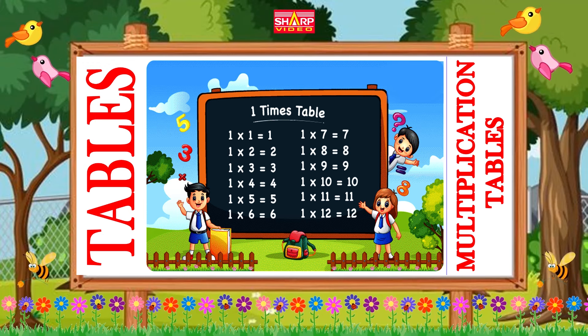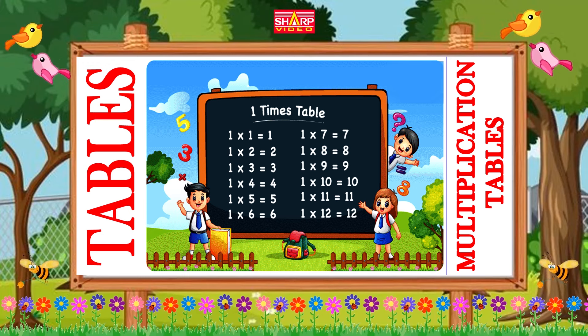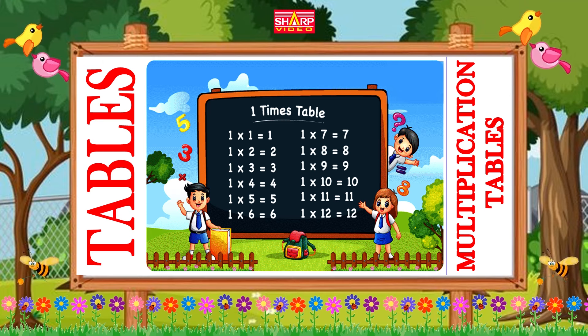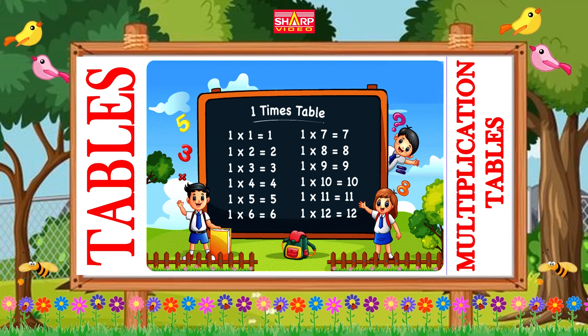One table. One one is one, one twos are two, one threes are three.